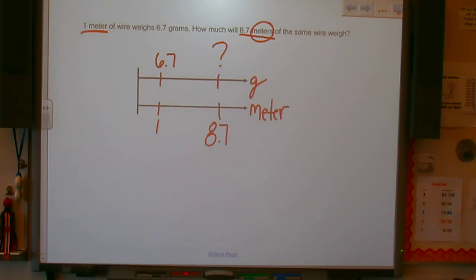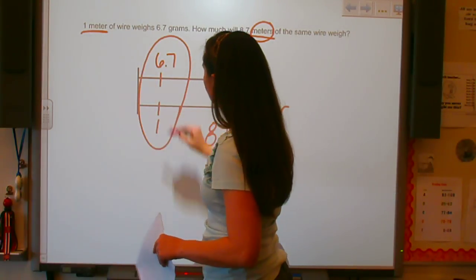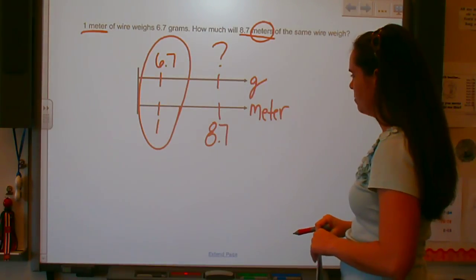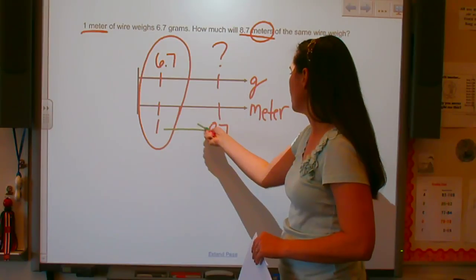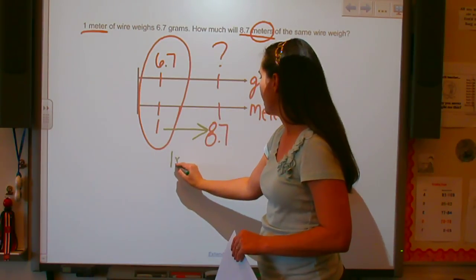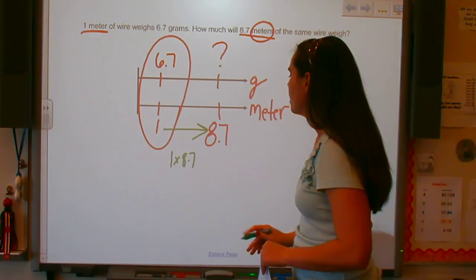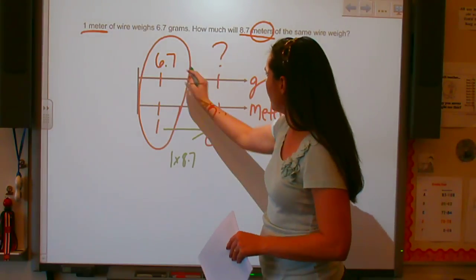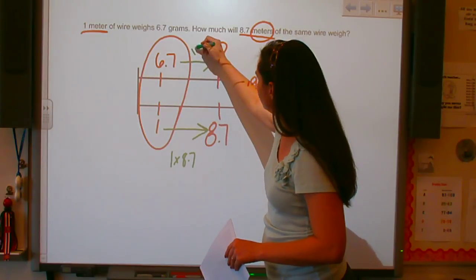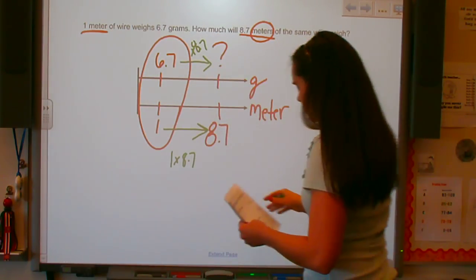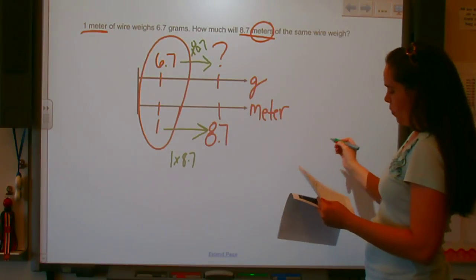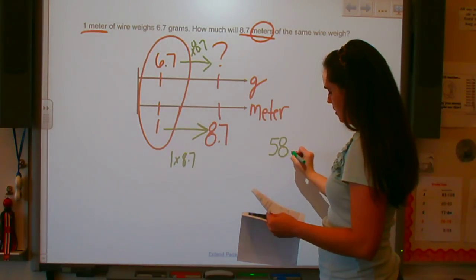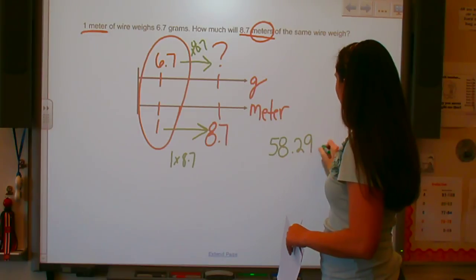So now we know this relationship: one meter has a mass of 6.7 grams. To go from here to here on the number line, all we have to do is say 1 times 8.7. Since the relationships are the same, then I can say 6.7 times 8.7. And that means that 8.7 meters would be 58.29 grams.